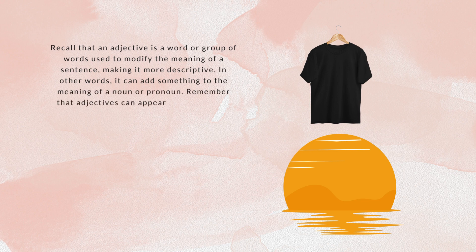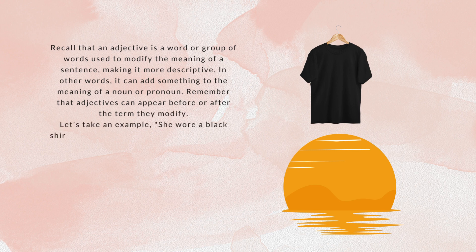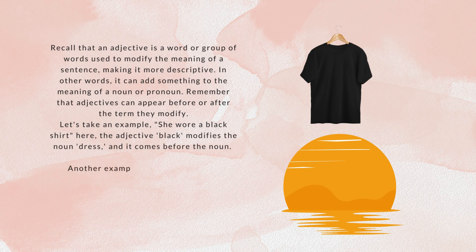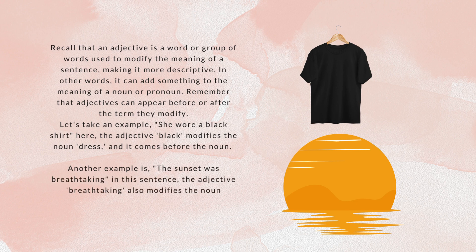Remember that adjectives can appear before or after the term they modify. For example, in 'she wore a black shirt,' the adjective 'black' modifies the noun and comes before it. Another example is 'the sunset was breathtaking,' where the adjective 'breathtaking' modifies the noun 'sunset' and comes after it.